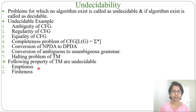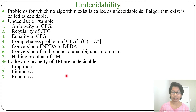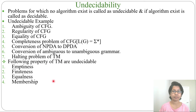Next, the property of finiteness — you cannot say whether a Turing machine accepts a finite number of strings or an infinite number of strings. Next is equalness: whether two Turing machines are equal or not is undecidable. Next is membership: given one string, whether it can be a member of some Turing machine — that is, whether it can be accepted by some Turing machine — is undecidable.